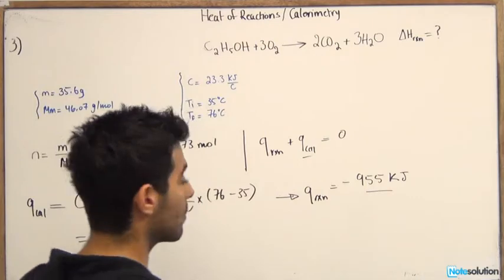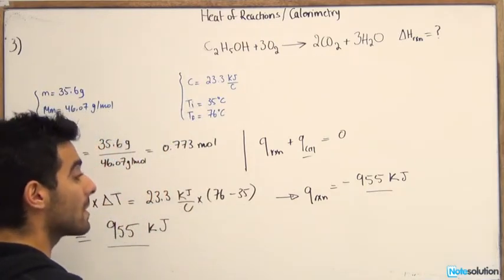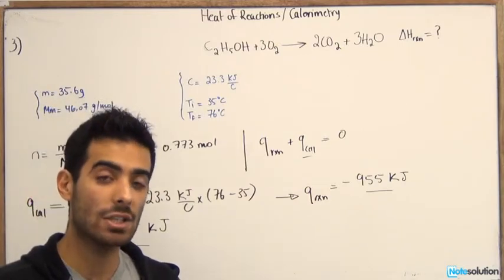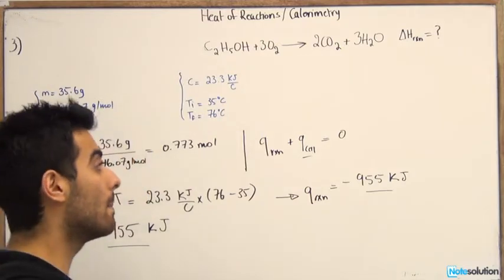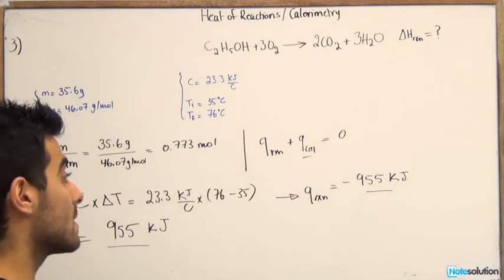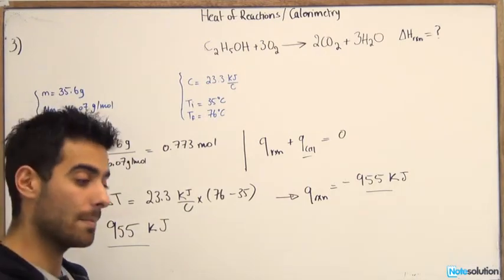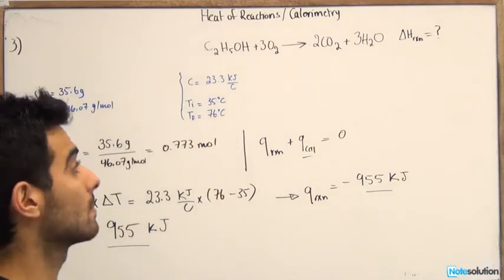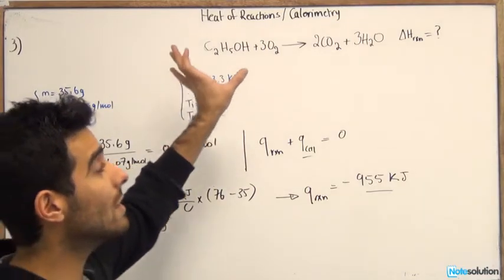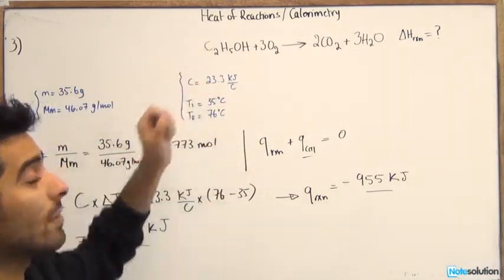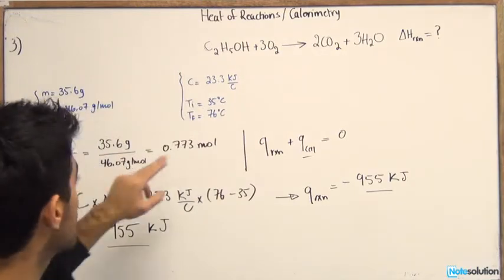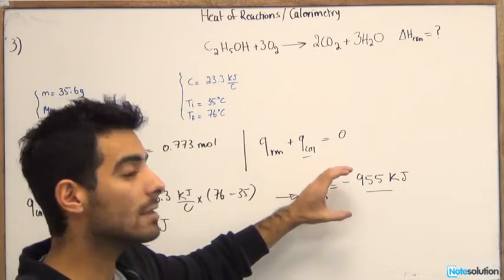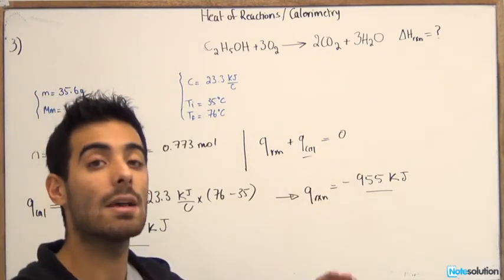So now we know Q of reaction. But remember that Q of reaction represents the amount of heat, the quantity of heat for the reaction itself. But it is not a specific representative of the delta H reaction. Okay, because over here, we're dealing with one mole of ethanol. We're not dealing with 0.773 moles of ethanol. So we need to make it in a general form as per mole.